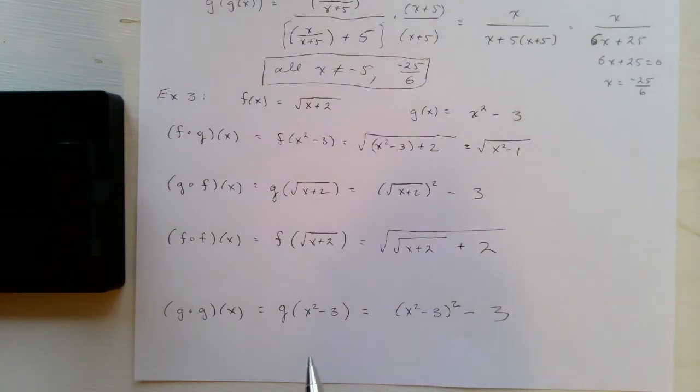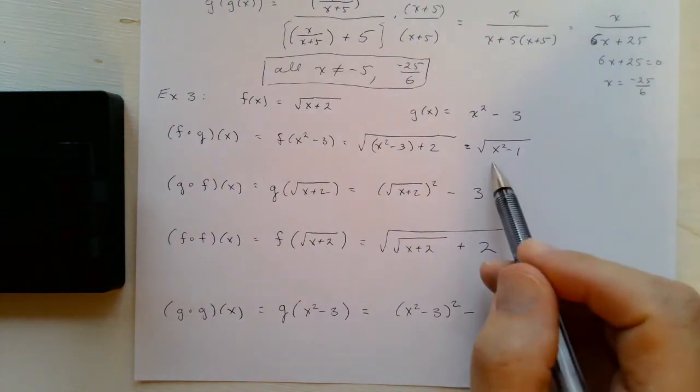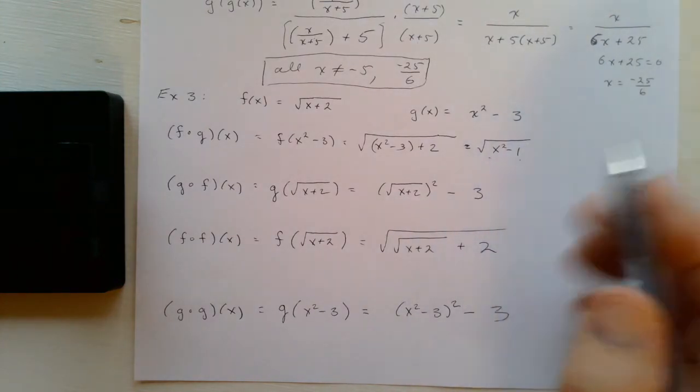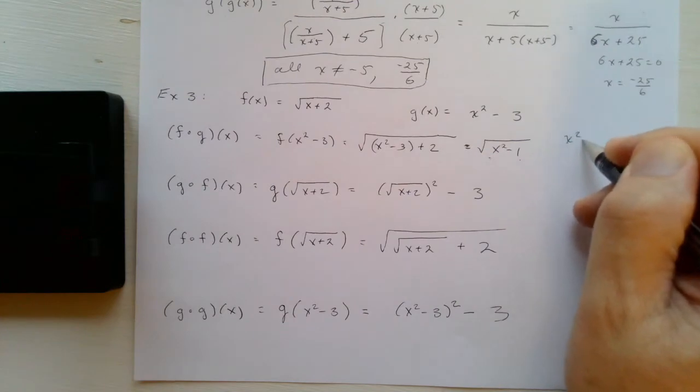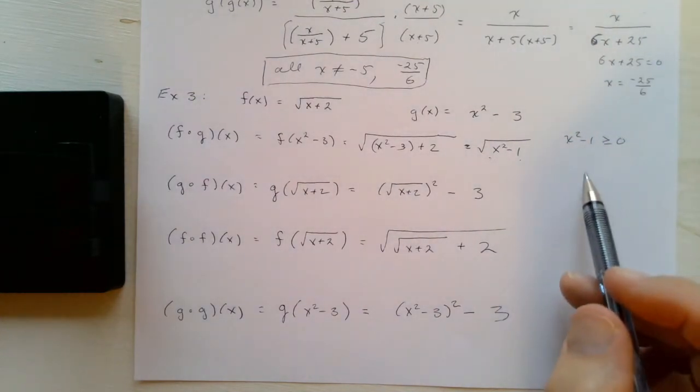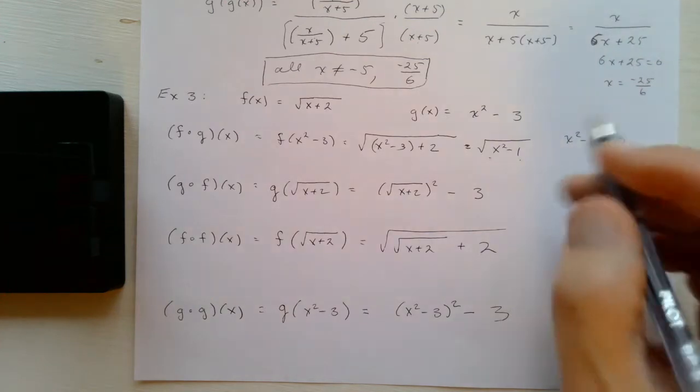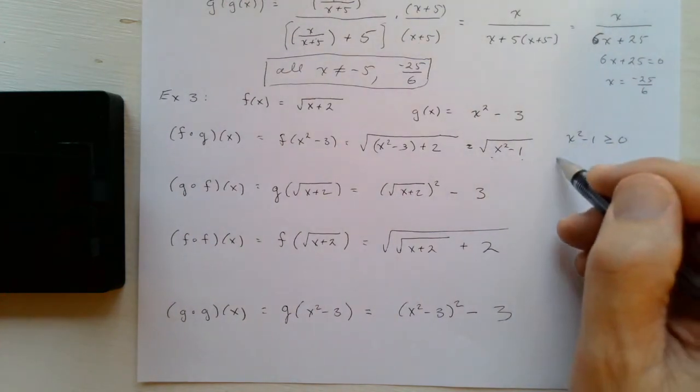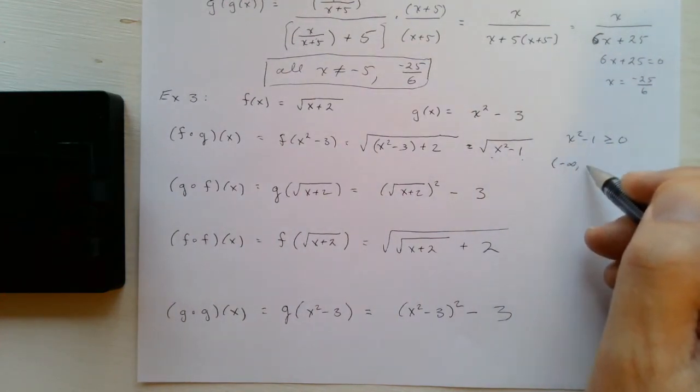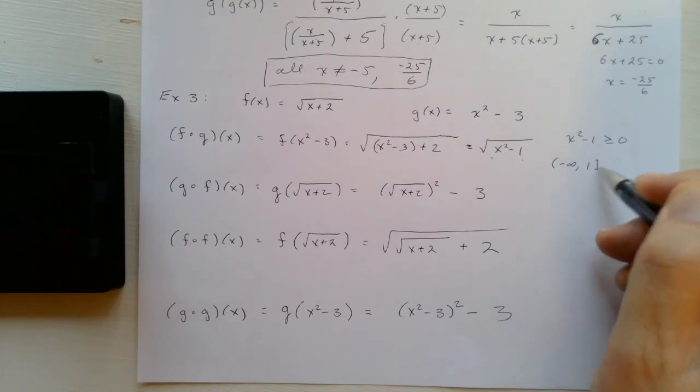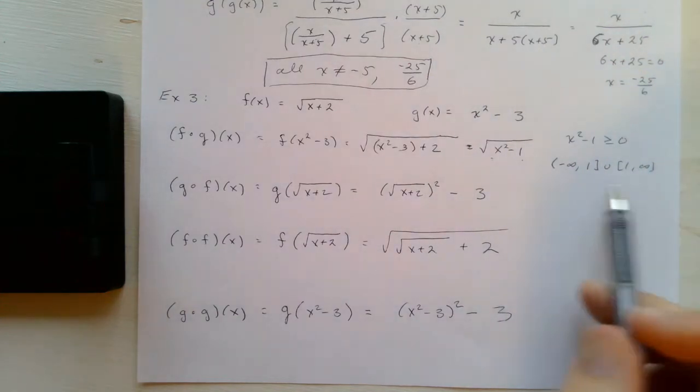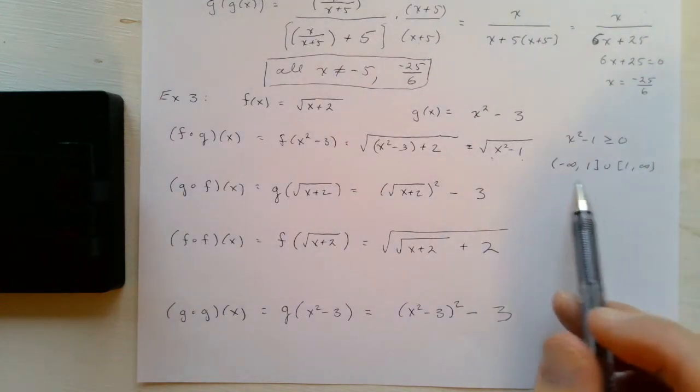Now as for the domain, what would the domain be? Well the domain would be all x where x squared minus one is greater than or equal to zero. So the domain would be, we already talked about how to solve these inequalities, and this is going to be when x is in the interval from negative infinity to negative one or one to infinity. You go ahead and do the usual thing with making sign charts, so that would be the domain of this first composition.